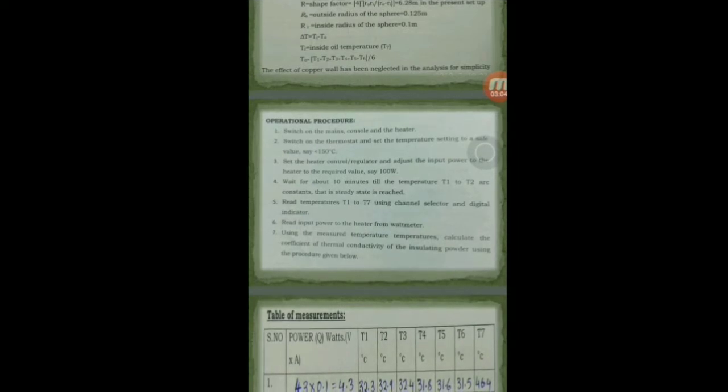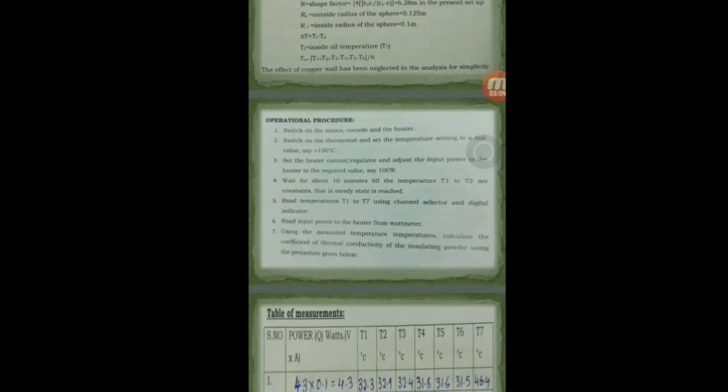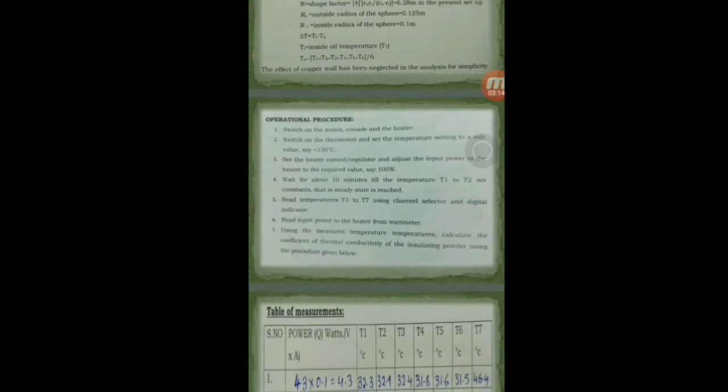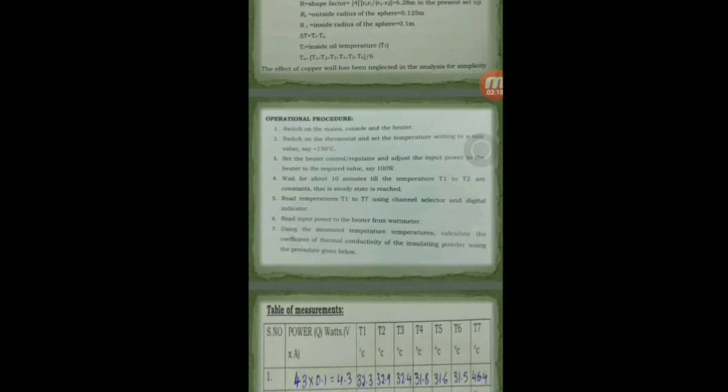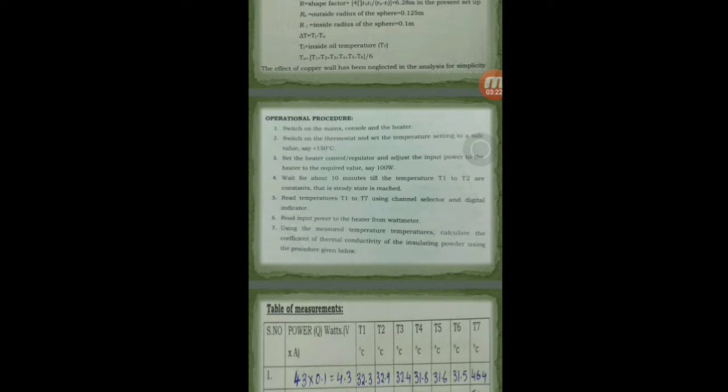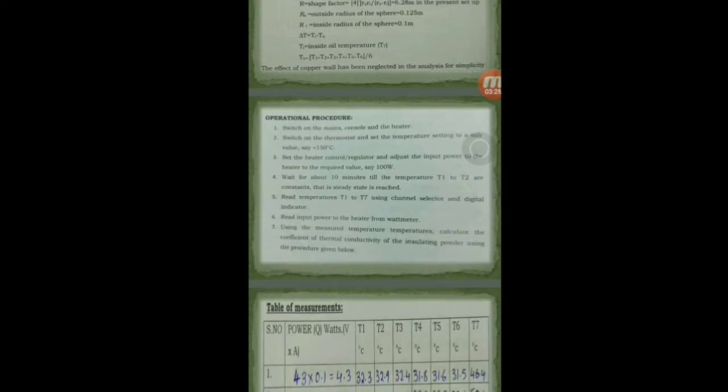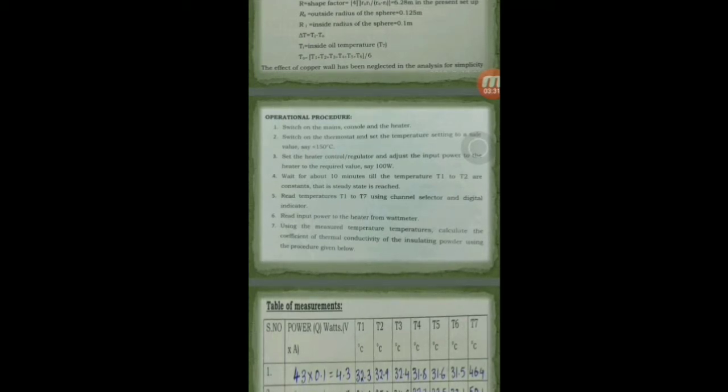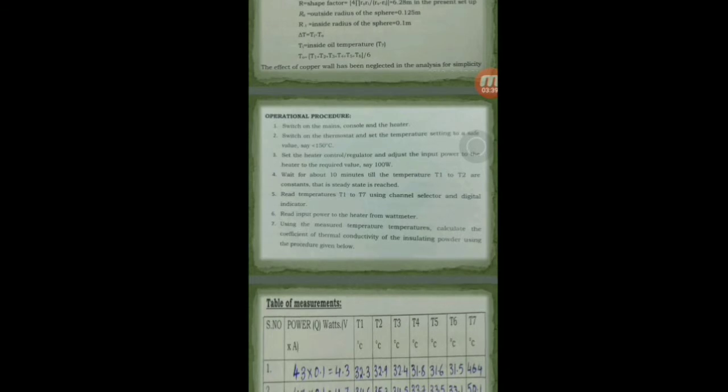The next step to be followed is the operational procedure. In the operational procedure, the first and foremost step is to switch on the mains, then the console and the heater. Then, switch on the thermostat and set the temperature to the required value, maybe less than 150 degrees centigrade. It should never exceed 150 degrees centigrade. Then, set the heater control or the thermostat and set the input power to the heater, maybe like 100 watts. Then, wait for a few minutes, maybe 10 minutes, till the temperatures are constant, that is, the steady state is obtained.